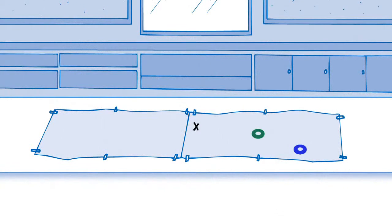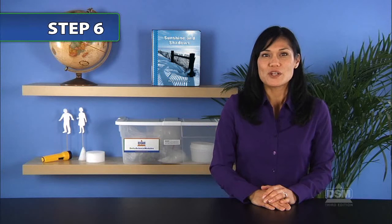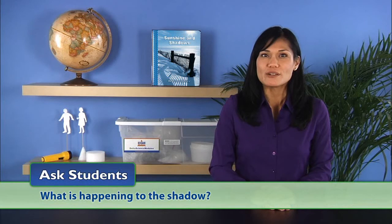After another 45 minutes pass, invite a third volunteer to color in the shadow on the paper using red chalk and record the time. Next, ask students, what is happening to the shadow? Students should see that the shadow is moving.